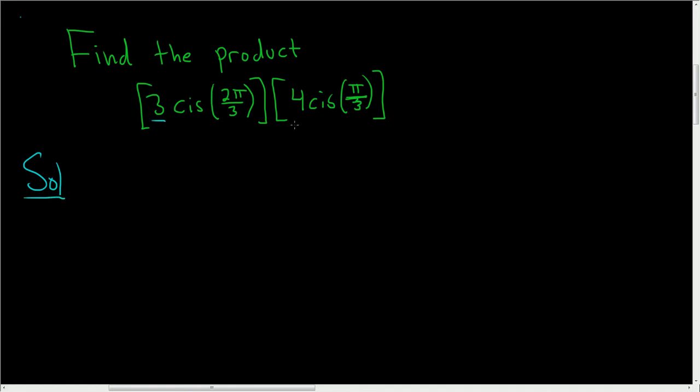So first you just multiply the numbers, so 3 times 4 is 12. And then we get cosine i sine, or cis, of, and to figure out what goes here, whenever you're multiplying complex numbers in trig form, all you do is you add the angles.